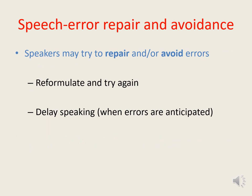When we notice that we've made an error, we may attempt to repair it in order to minimise the possibility that the listener will misinterpret what we intend to communicate. Alternatively, we may try to anticipate potential errors before they occur, and prevent them from happening in the first place. Both error repair and error avoidance can result in disfluent speech, and the more errors we try to repair or avoid, the more disfluent we're likely to be.